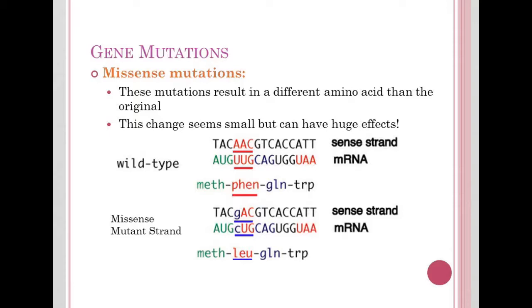The next type of substitution mutation is a missense mutation. These mutations result in a totally different amino acid than what the original was. This seems small, especially when protein chains can be several hundred amino acids long, but it can have huge effects in some cases.